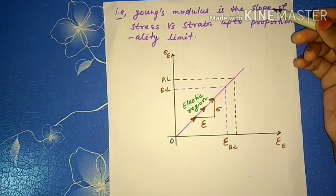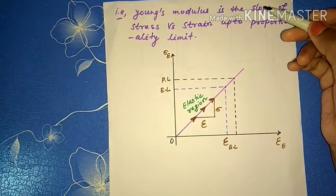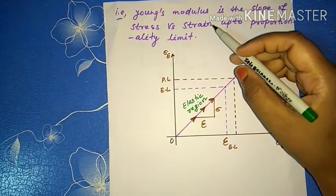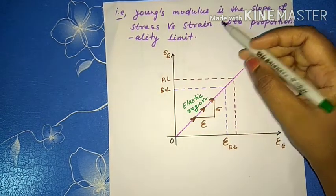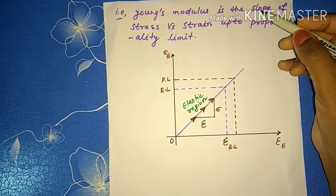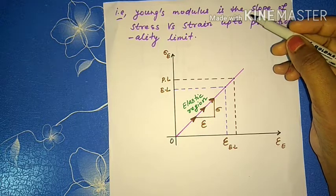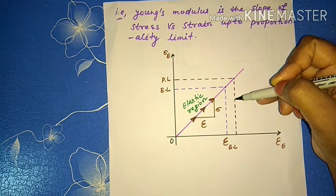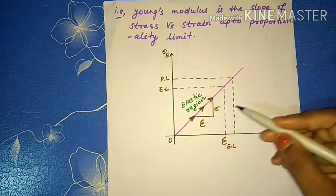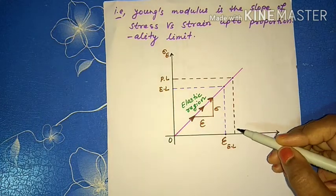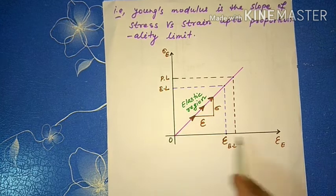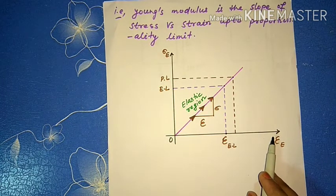Young's modulus is the slope of the stress versus strain curve up to the proportionality limit. In the stress-strain graph shown, the curve represents the relationship between stress and strain for a given material.